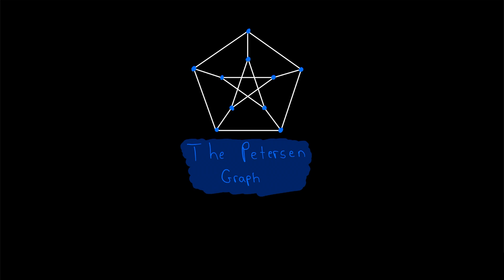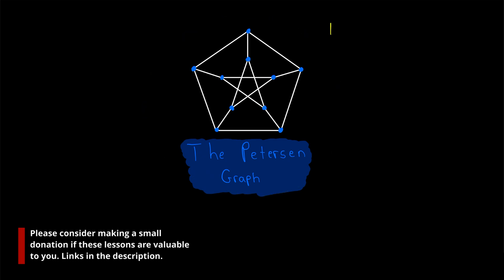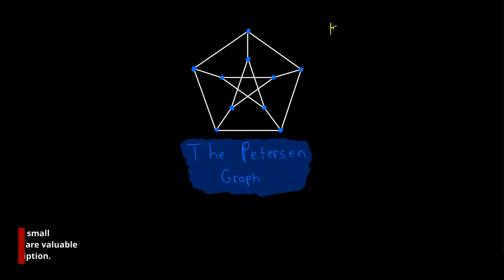What is the vertex connectivity of the Petersen graph? The vertex connectivity of a graph is typically denoted lowercase kappa of the graph, like kappa of G. We'll write kappa of P to denote the vertex connectivity of the Petersen graph.